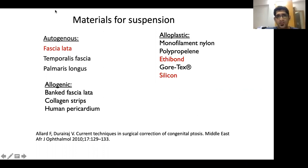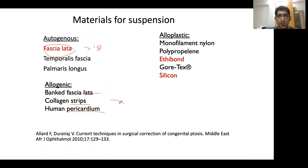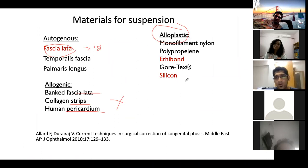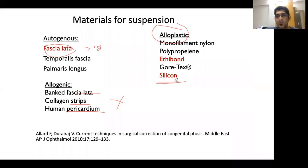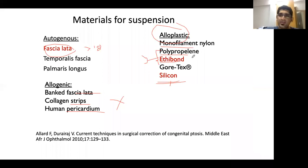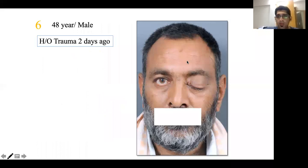Materials for frontalis suspension include: autogenous fascia lata (most permanent, usually harvested after age 18 when fascia lata is fully developed); allogenic options like banked fascia lata, pericardium, or collagen strips (less common); and silicone suspension kits (most commonly used, forming an adhesion between eyebrow and eyelid). In very young children at risk of amblyopia, a 3-0 or 4-0 Ethibond suture can be used temporarily to suspend the eyelid, enabling amblyopia therapy.